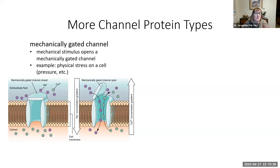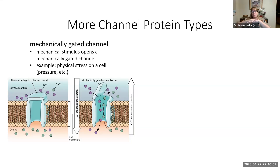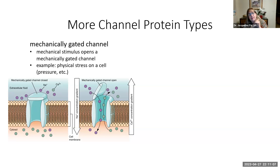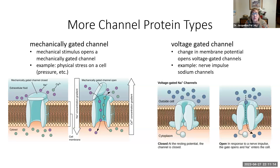Mechanically gated channels are similar but they have a cover on them, like a manhole cover. When there is mechanical pressure on that cover, it gets pushed to the side, the channel opening is exposed, and ions go down their concentration gradient. These are found in cells that undergo mechanical or physical stress.